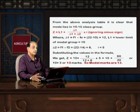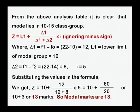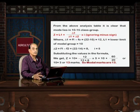We apply the formula z = L1 + (delta1 / (delta1 + delta2)) × i, ignoring the minus sign. Here delta1 = F1 − F0 = 22 − 10 = 12, and L1, the lower limit of the modal group, is 10. Delta2 = F1 − F2 = 22 − 14 = 8, and i, the class interval, is 5. Substituting: z = 10 + (12 / (12 + 8)) × 5 = 10 + (60 / 20) = 10 + 3 = 13 marks. So the modal marks obtained by the students are 13.